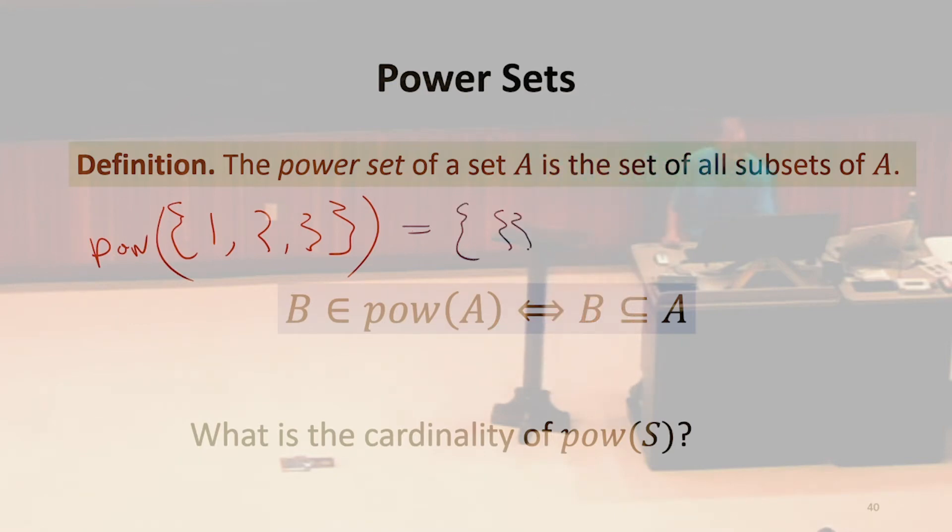It's going to have the empty set. It's going to have the set containing one, the set containing two, the set containing three, the set containing one, two, and so on.